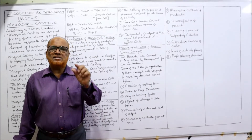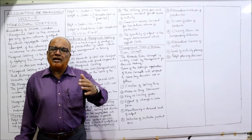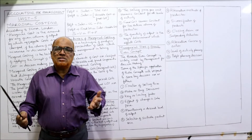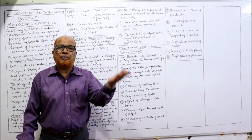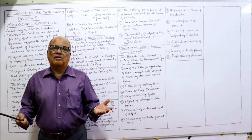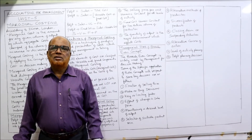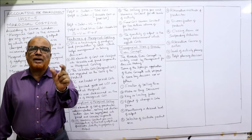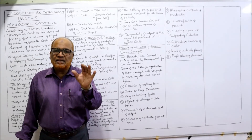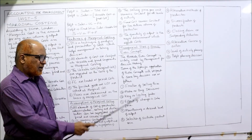If arbitrarily a high price is fixed, demand will come down and no customer will come forward. If an arbitrarily low price is fixed, the business cannot earn profit. The price should be neither too high nor too low — it should be reasonable so that demand is maintained and profit is adequate. Fixing the selling price is therefore one important area where management uses the marginal costing technique.